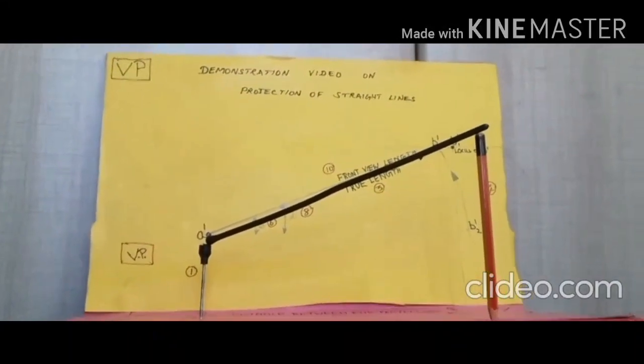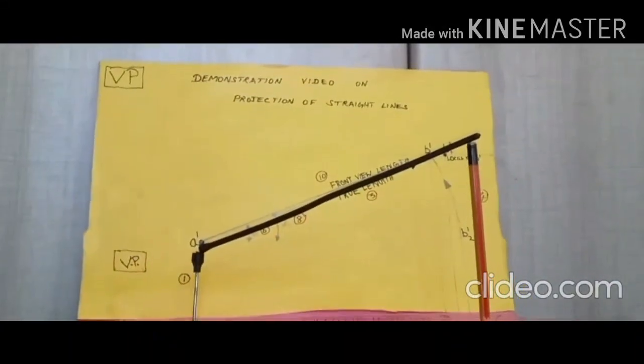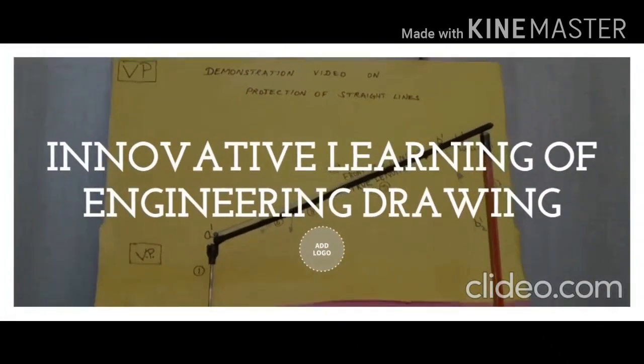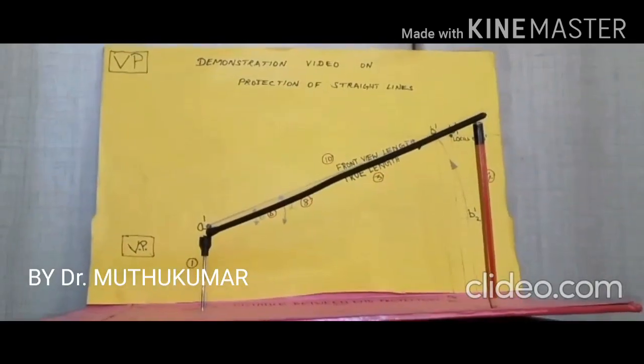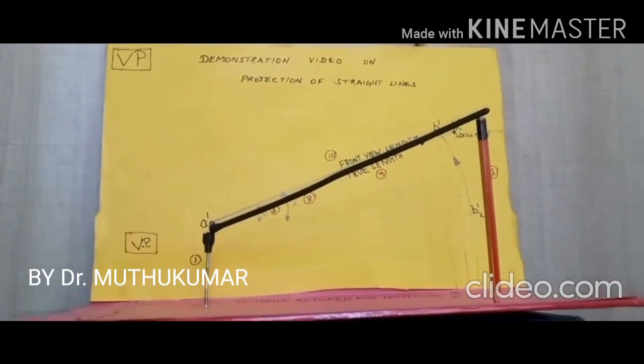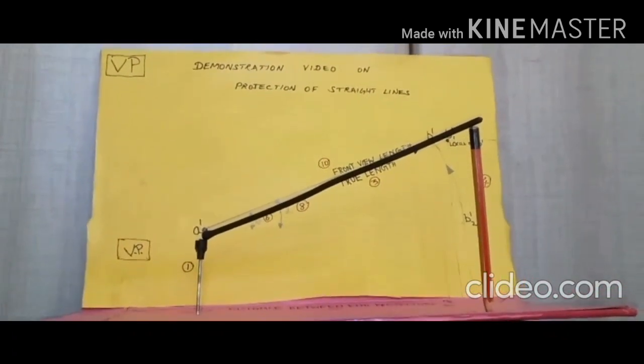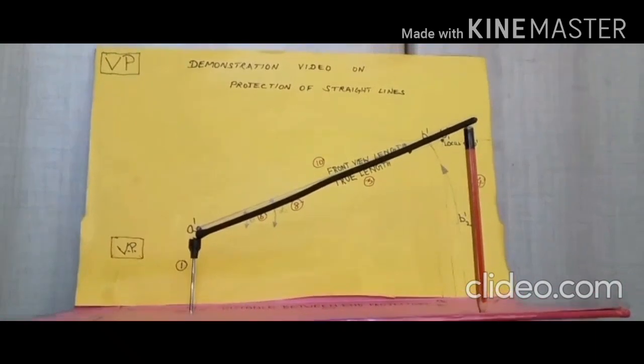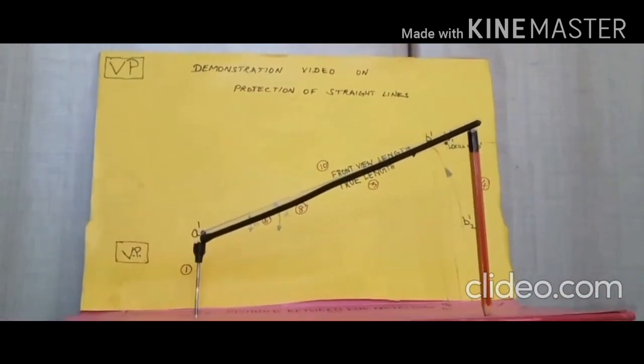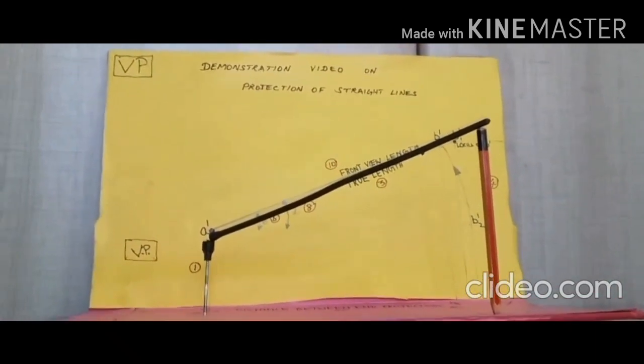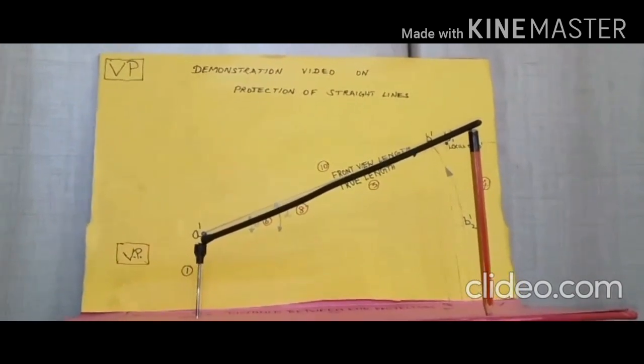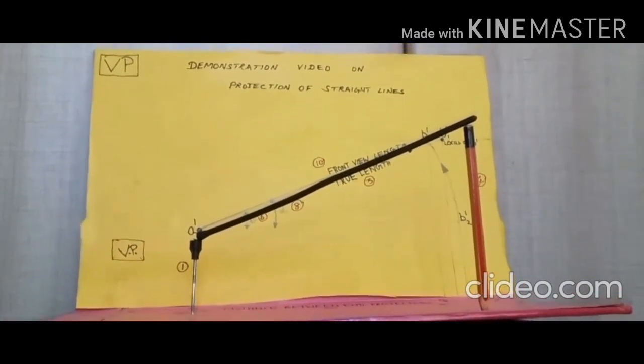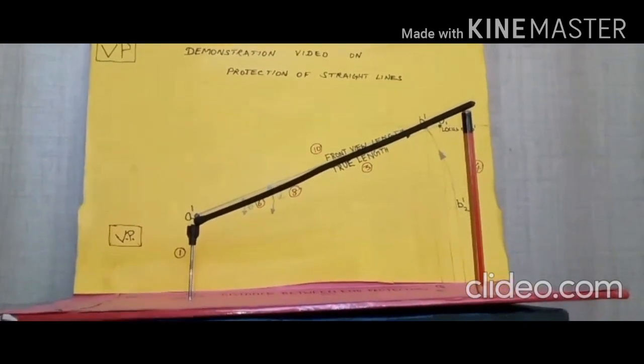Warm welcome to innovative active learning of engineering drawing. Today I am going to demonstrate and explain the orthographic projection of straight lines inclined to both reference planes by using rotating line method. Now we are going to make the straight line model by using the following materials.